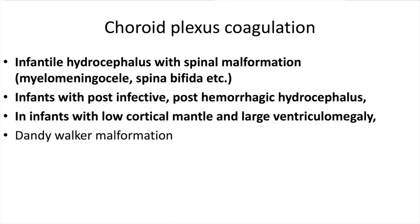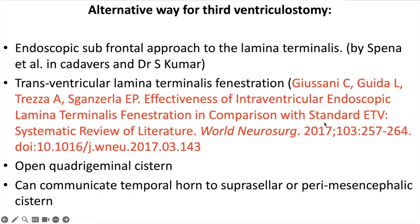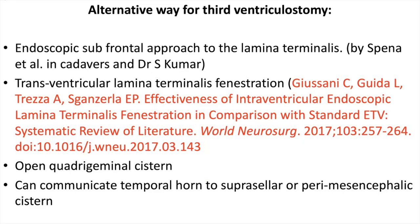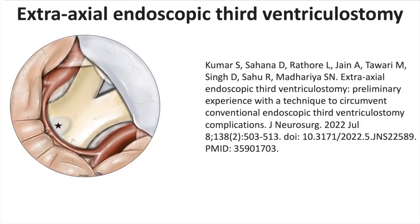Choroid plexus coagulation can be combined with ETV in infantile hydrocephalus with spinal malformation such as myelomeningocele and spina bifida, in infants with infective and post-hemorrhagic hydrocephalus, in infants with low cortical mantle and large ventriculomegaly, and in Dandy-Walker malformation. Alternate sites for third ventriculostomy include subfrontal approach for lamina terminalis fenestration, transventricular lamina terminalis fenestration, quadrigeminal system opening, and communicating the temporal horn with the suprasellar or perimesencephalic system.